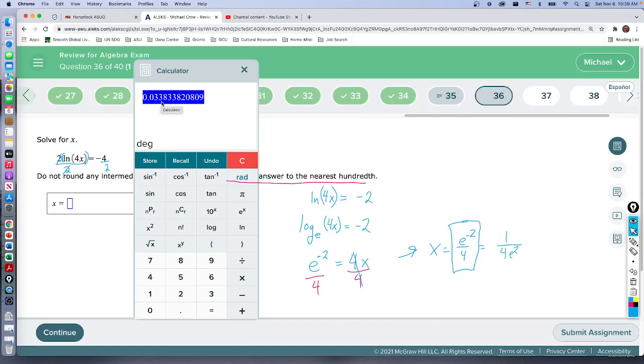Zero point zero three three is the next digit, so this is just going to be point zero three hundredths. This is the second place: zero point zero three. And just as a follow-up, I'm going to show you that if you did this as one over four e squared, we would get the same answer.